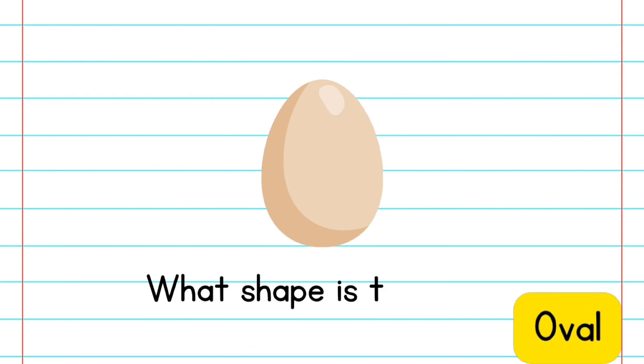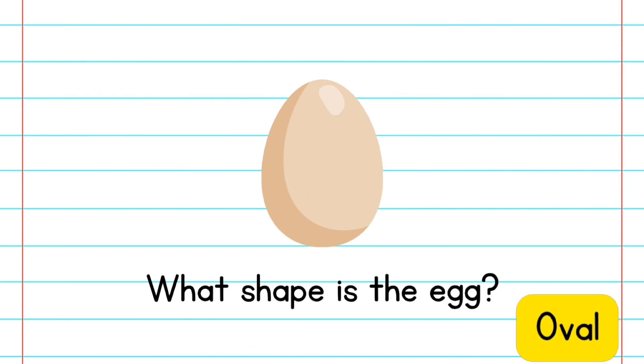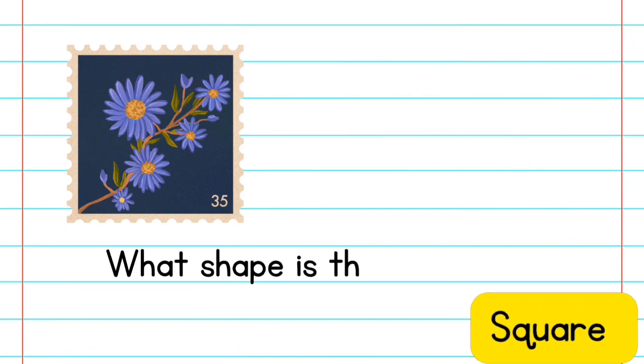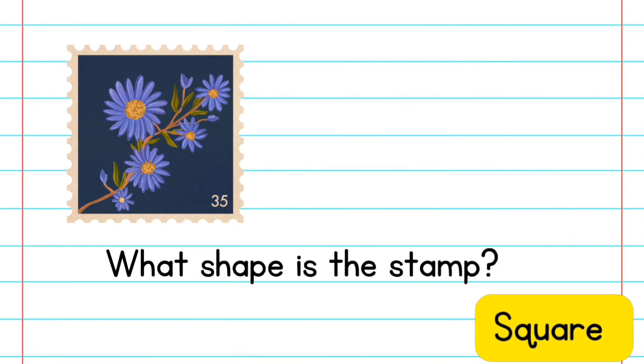What shape is this? This is an oval. What shape is this? This is a square.